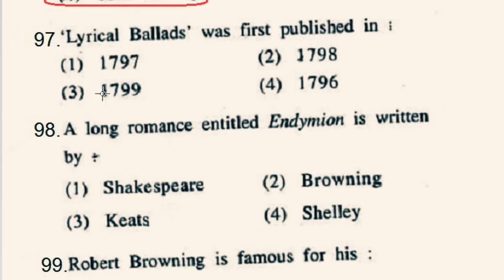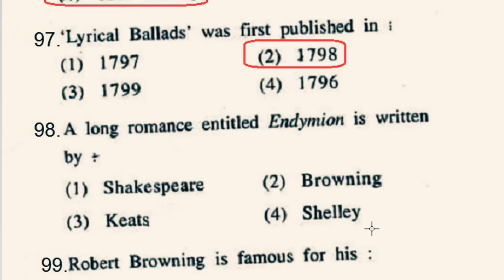Question number 97: Lyrical Ballads was first published in which year? The correct option is 2nd: 1798. Question number 98: A long romance entitled Endymion is written by whom? Endymion is a poetic romance written by John Keats, first published in 1818. This poem begins with the line 'A thing of beauty is a joy forever.' It is written in rhyming couplets in iambic pentameter.